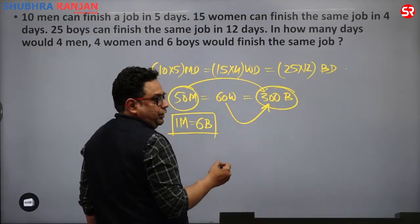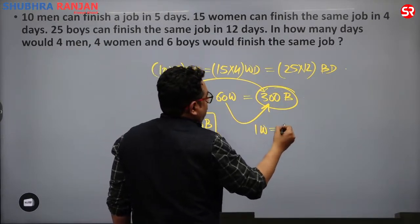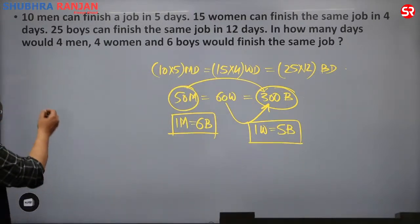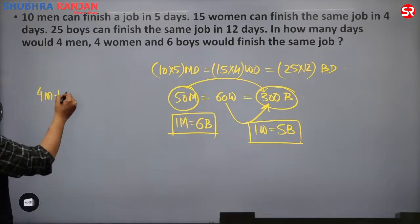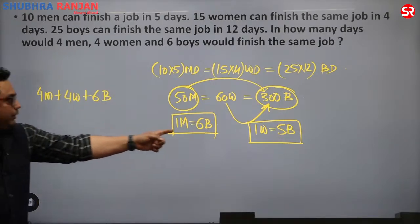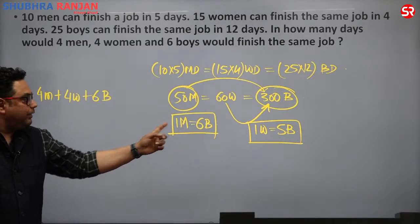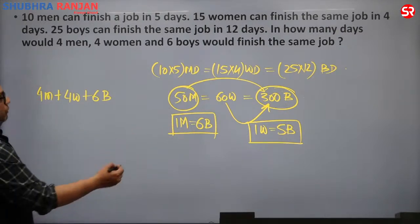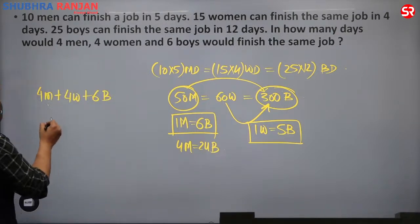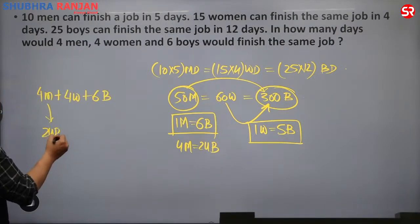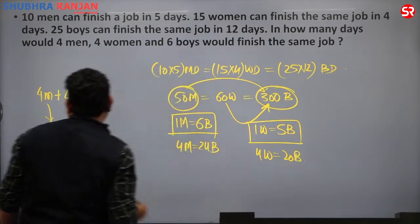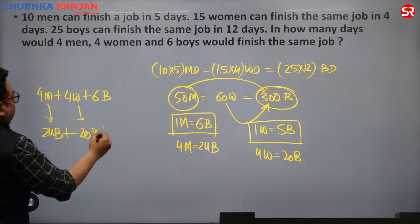Comparing: 50 men equals 300 boys means 1 man equals 6 boys. Also 60 women equals 300 boys means 1 woman equals 5 boys. Now: 4 men equals 24 boys, plus 4 women equals 20 boys, plus 6 boys equals 50 boys total.